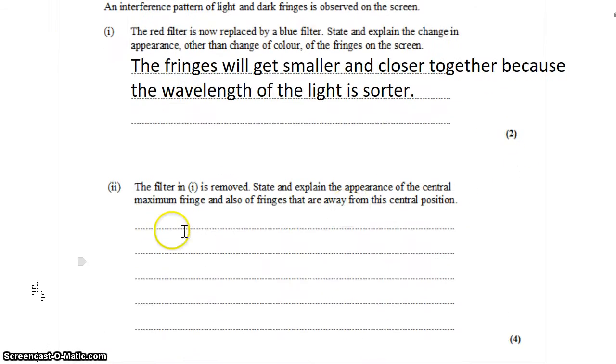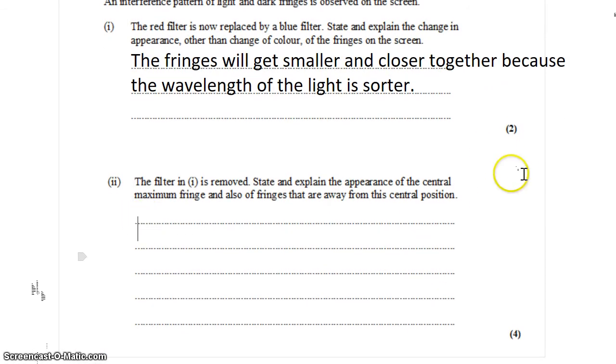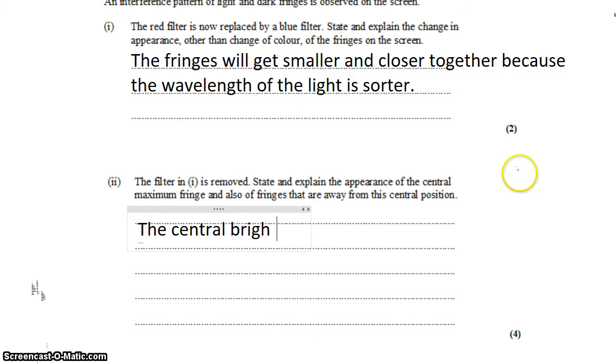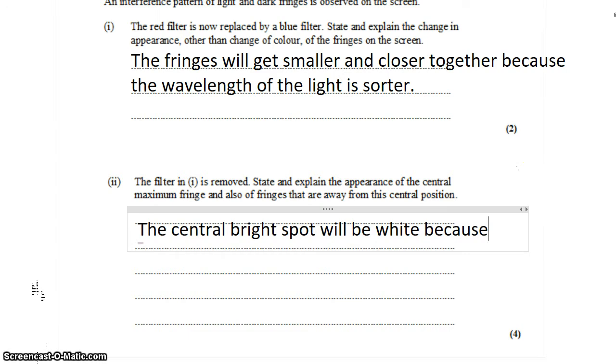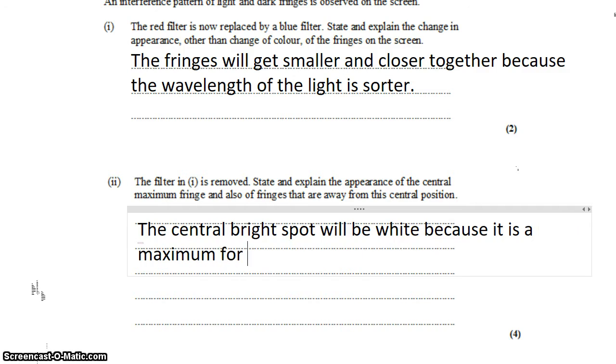So to answer the question, we can say that the central bright spot will be white. And we can say that it's going to be white because no matter how we change the wavelength of the light, the pattern is just going to be compressed, rather than shifted up or down. So the central bright spot, because the central bright spot is a maximum for all wavelengths of light.